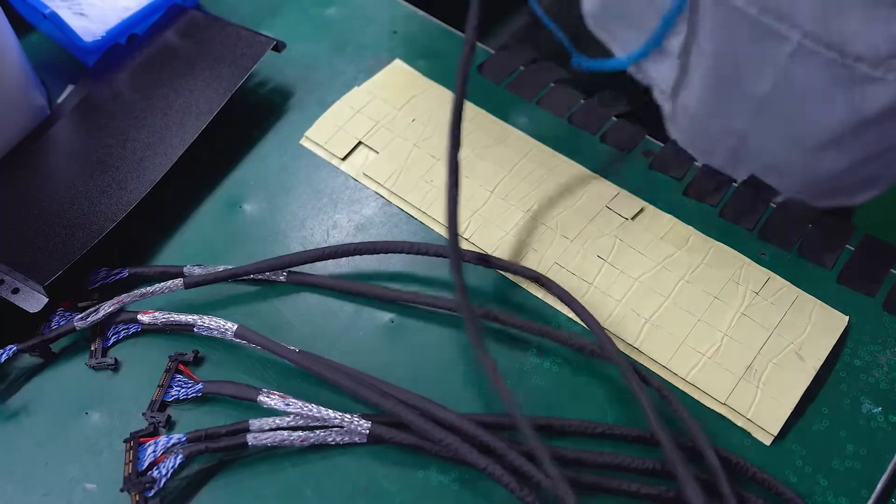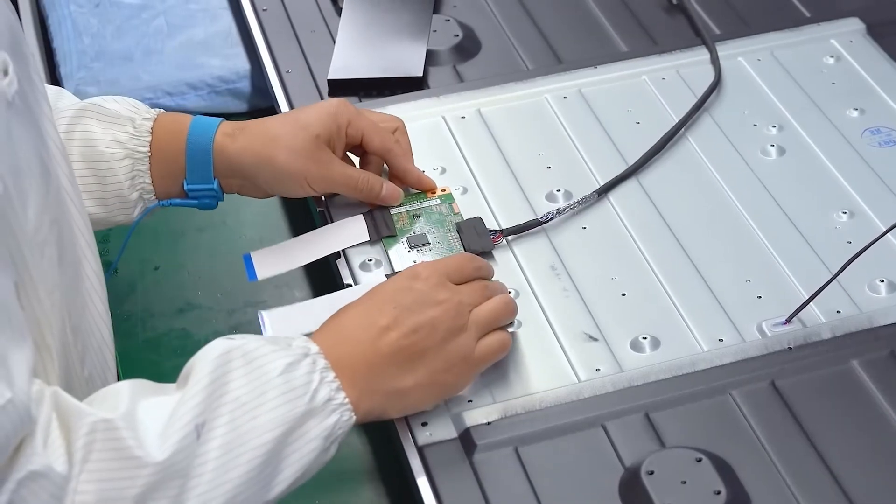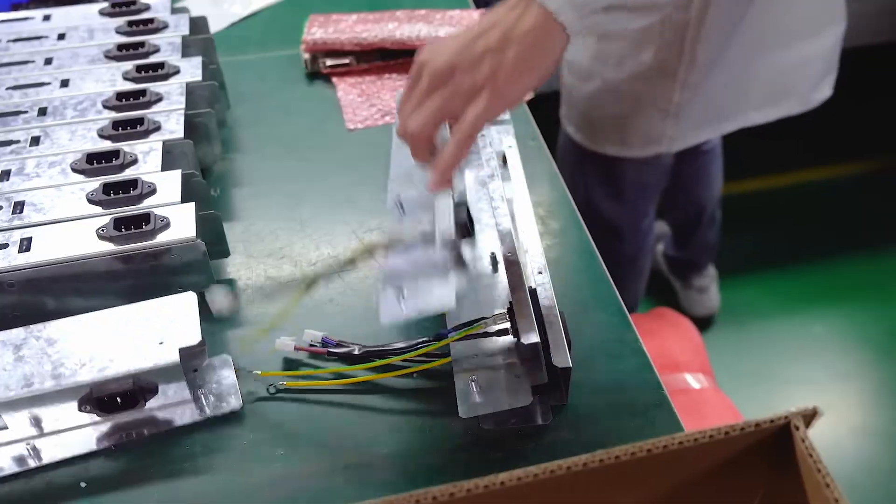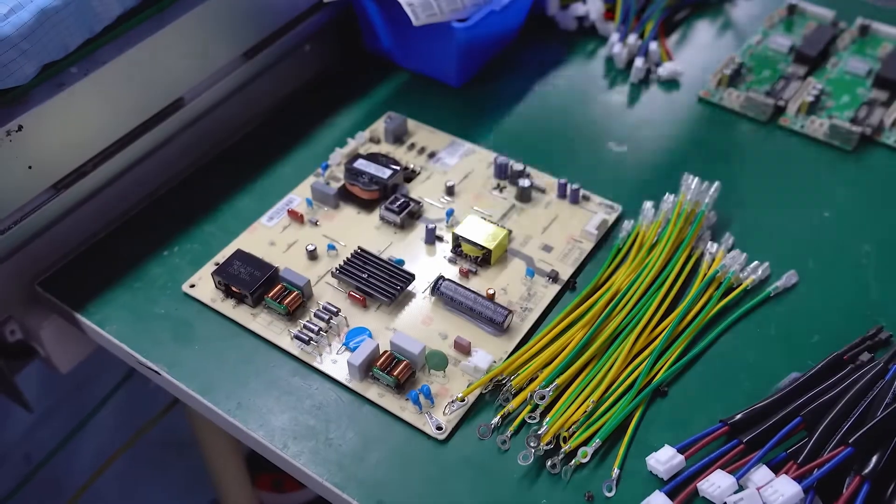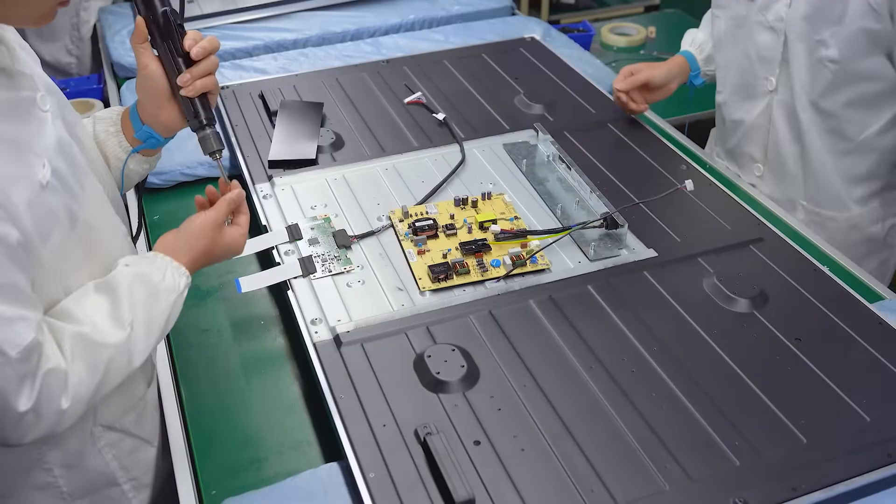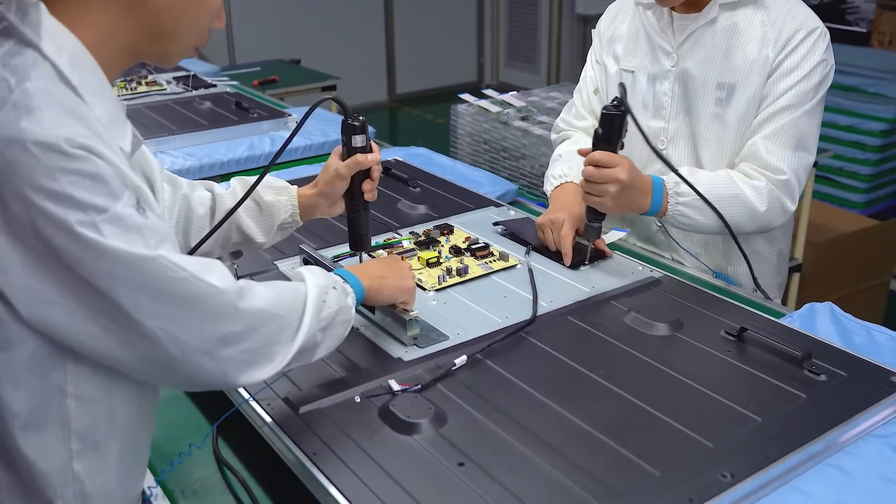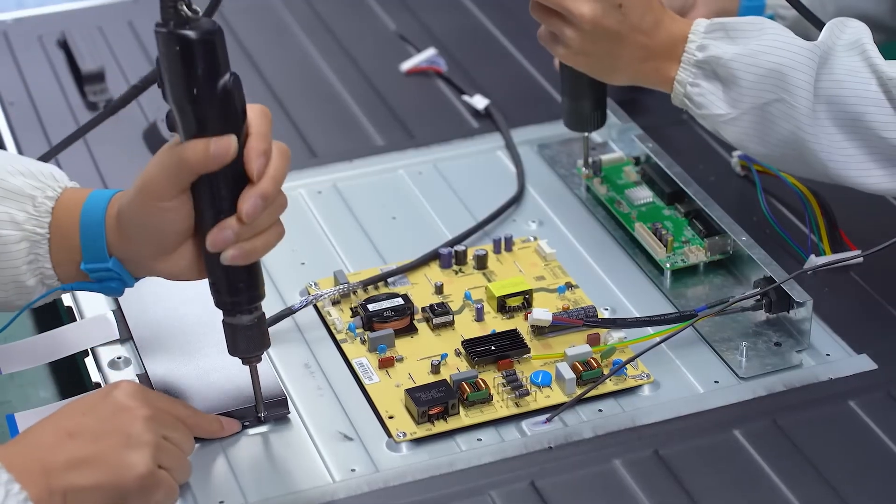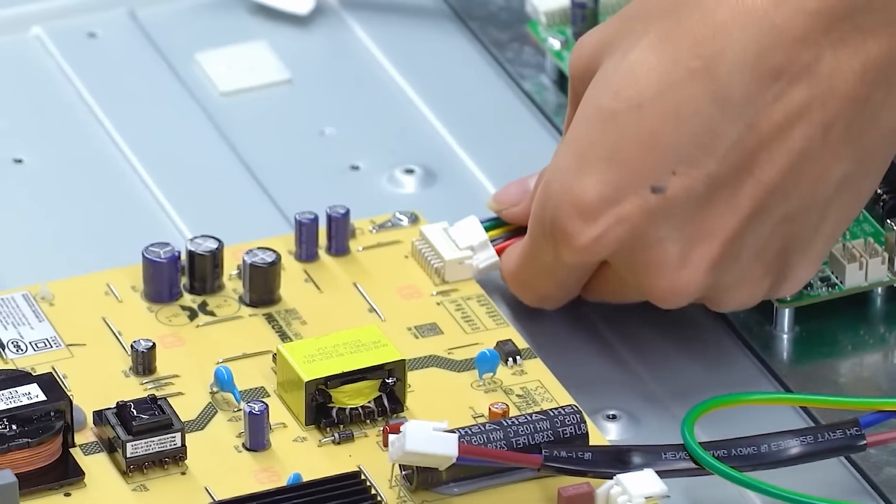Beyond the LCD panel and backlighting, the true functionality of an LCD TV comes to life with the integration of its display electronics. These electronics include critical components such as video converters, processing units, and controllers that manage everything from input signals to image rendering.